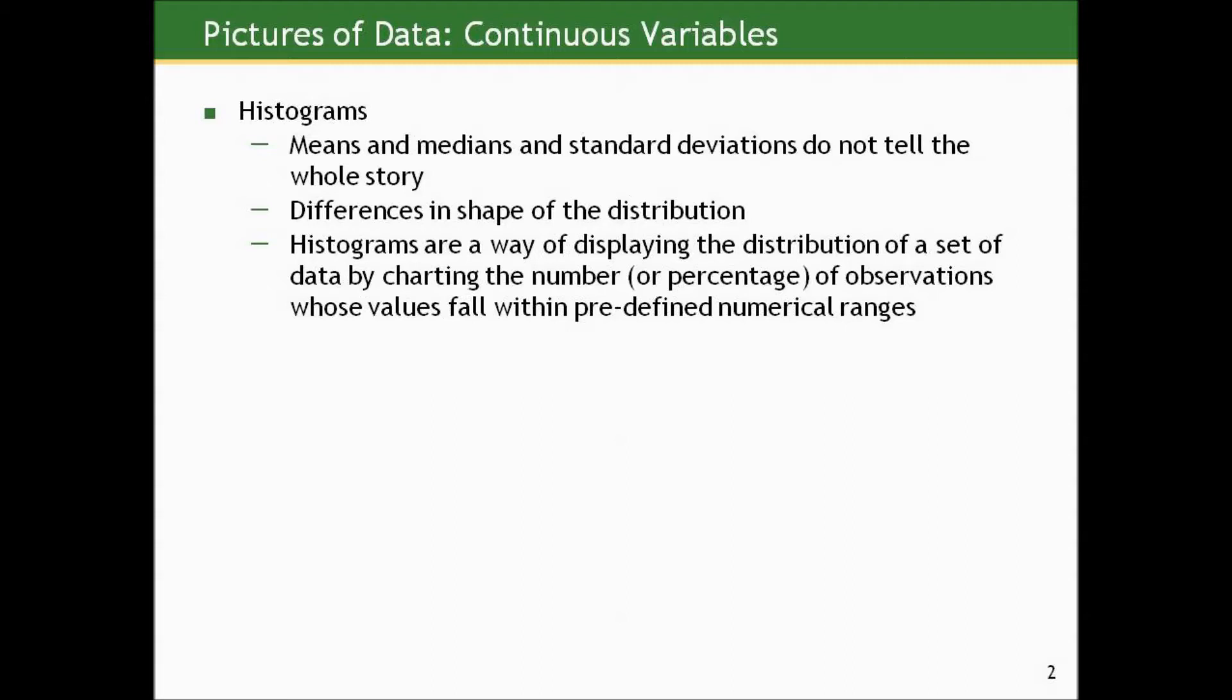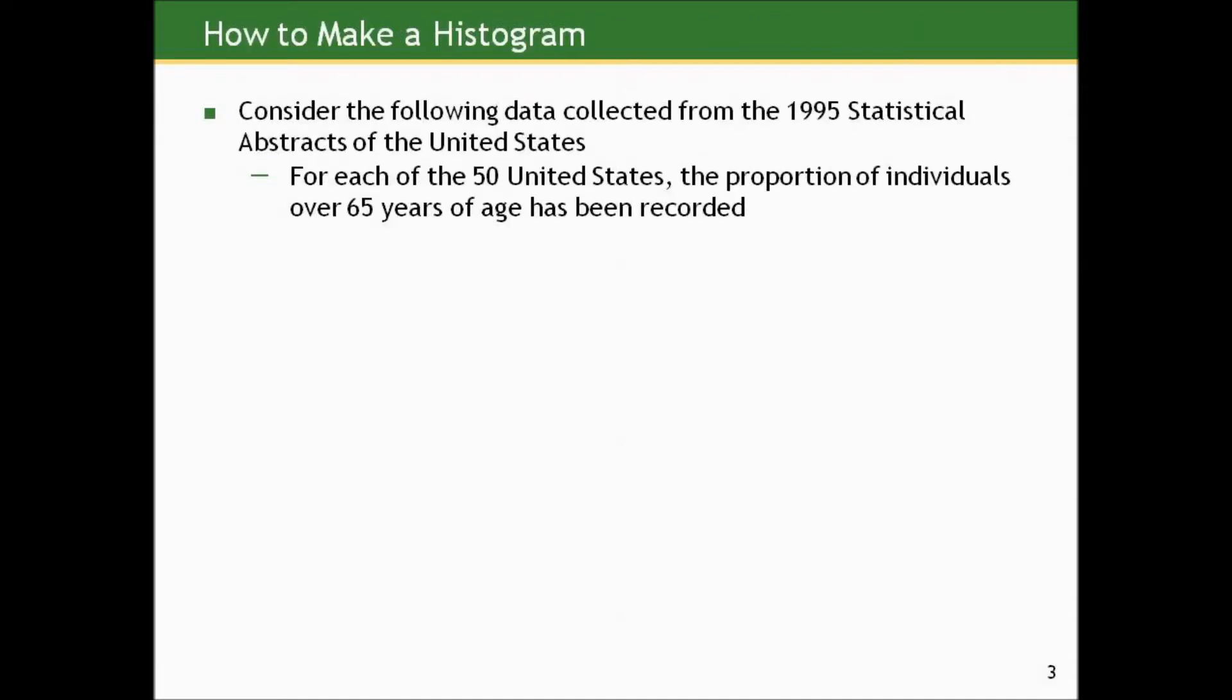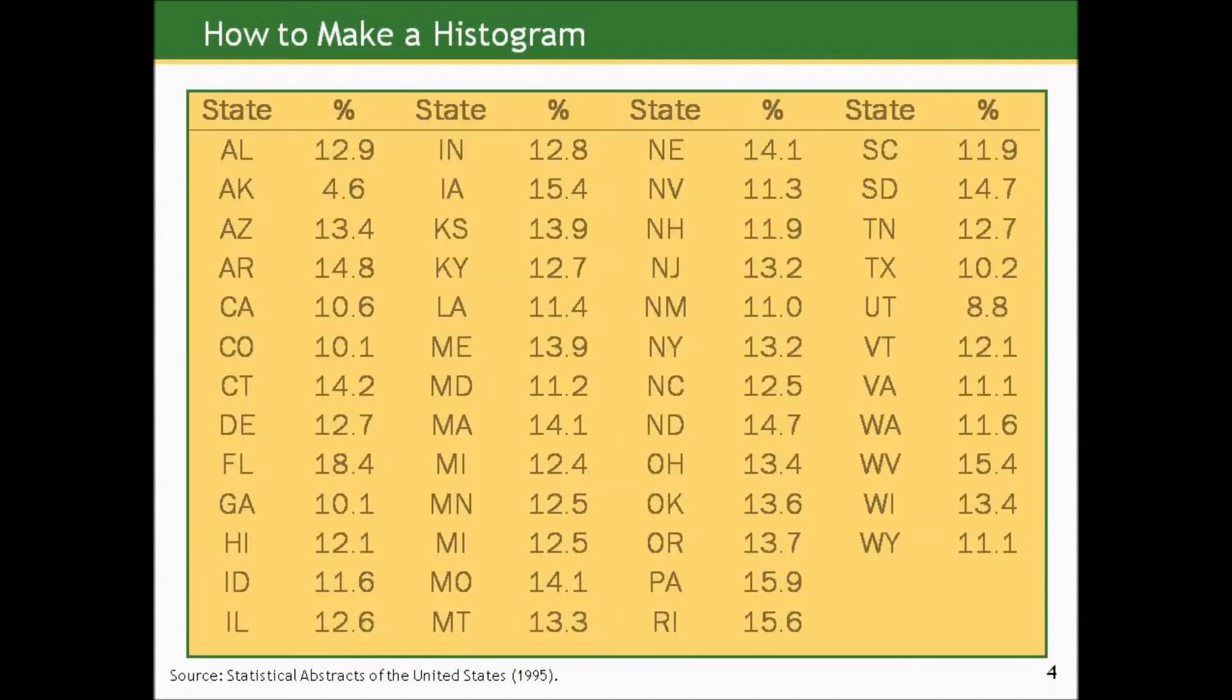So let's just give you an example. Consider the following data collected from the 1995 Statistical Abstract of the United States. This is older data, but for each of the 50 United States, the proportions of individuals over 65 years of age has been recorded. So here's the data in its raw form. Even though 50 isn't particularly large in the world of data sets, it's pretty hard to get the general gist of what's going on by looking at 50 measures. This is where a mean and standard deviation would be useful.